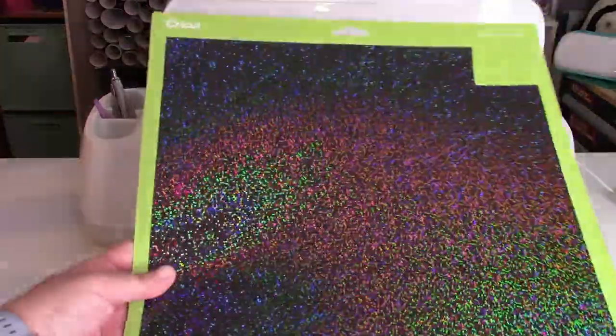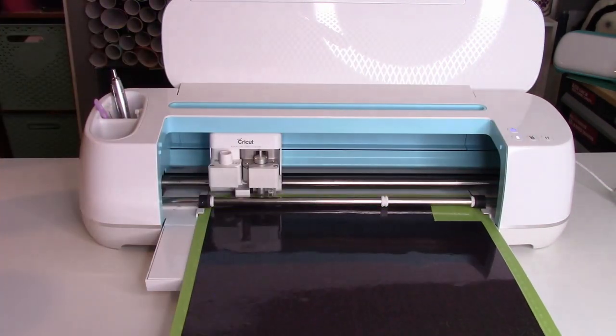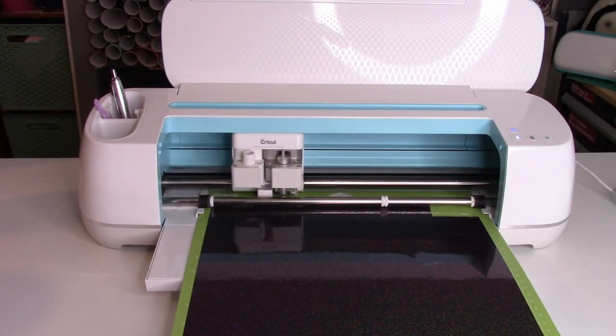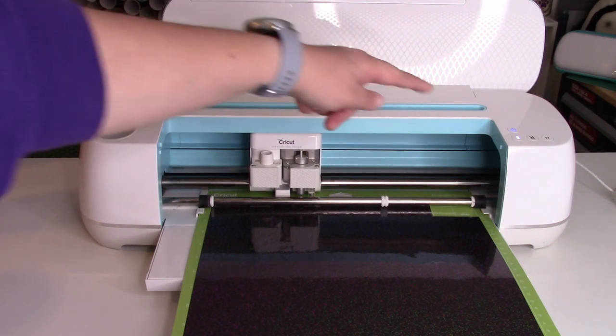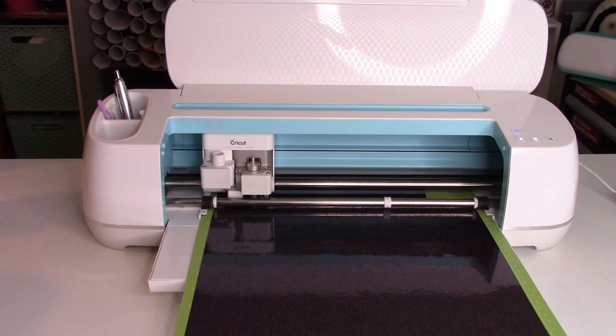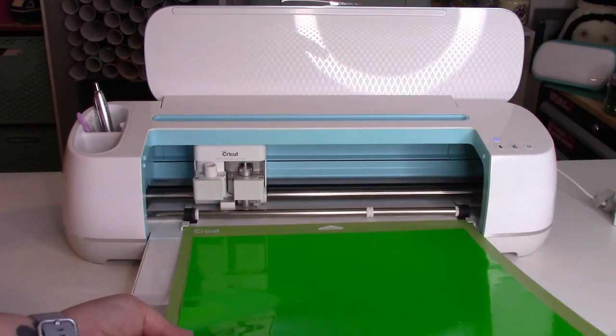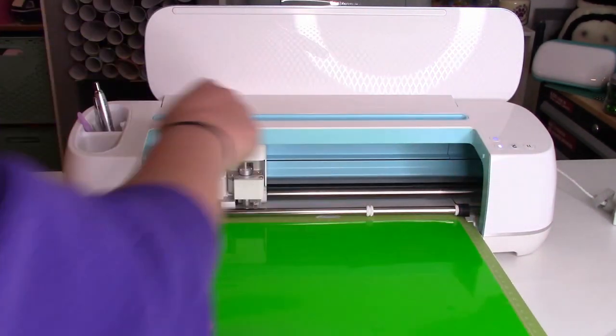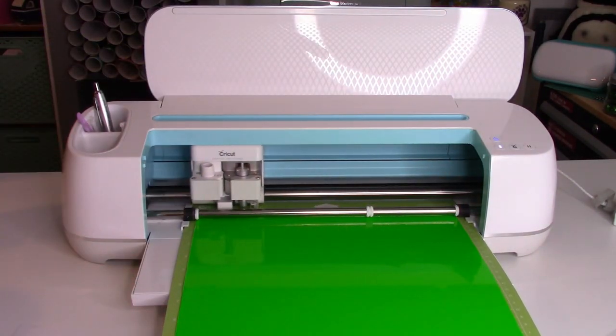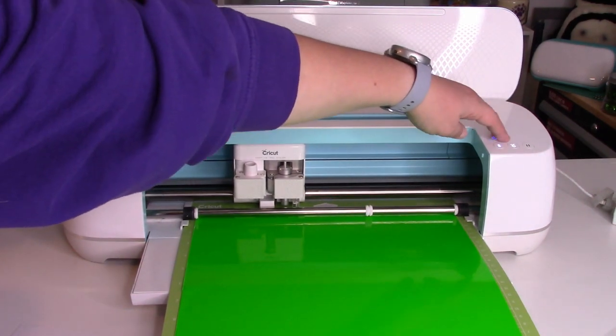Our first color that we're going to cut is the Gun Metal Hoax Hollow which is so sparkly. The Hoax Hollow has the larger sparkles in it where the Deceit is the smaller sparkles. The next color that we're going to use is Style Tech Fluorescent Green. This is a new line that 143 is carrying. I will link everything I'm using down below in the description.